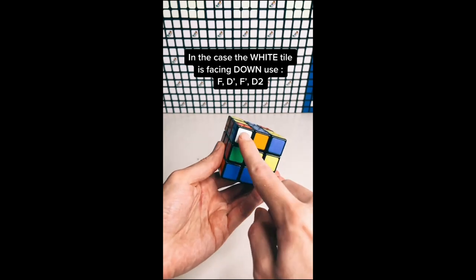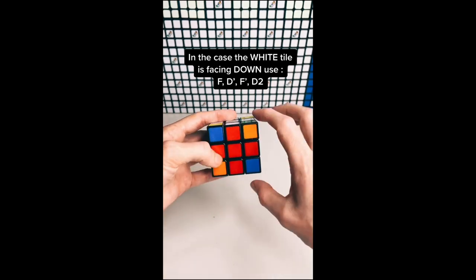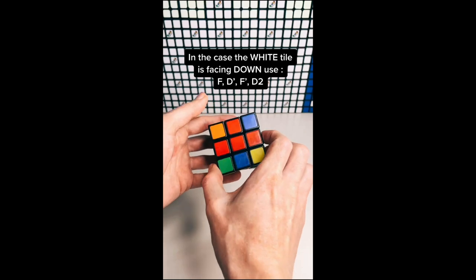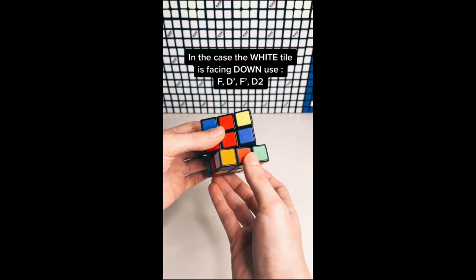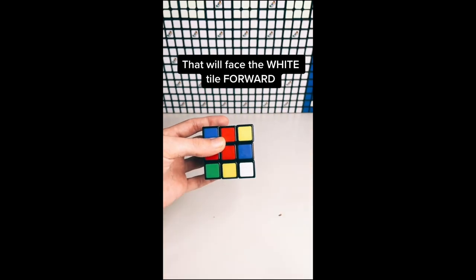In the case the white tile is facing down, use F, D, F', D2. That will face the white tile forward.